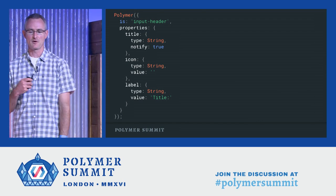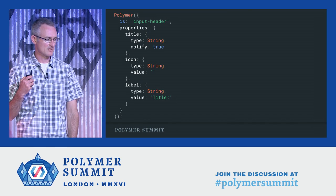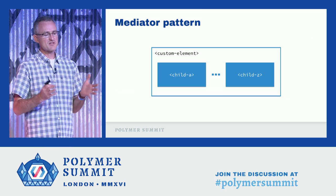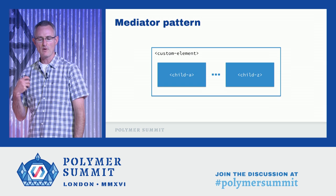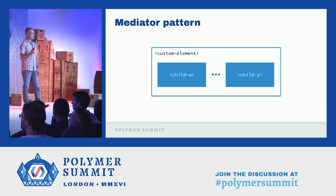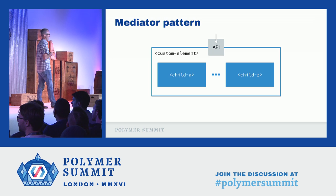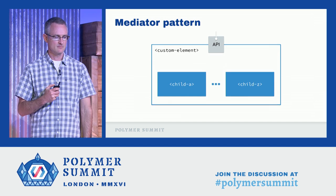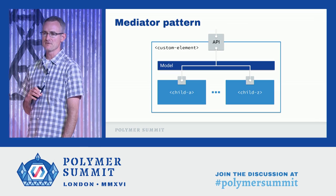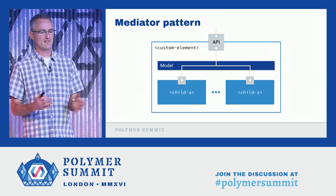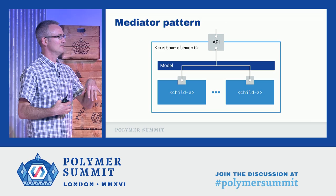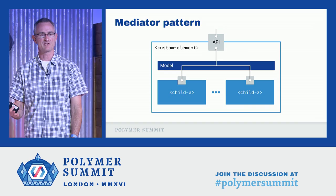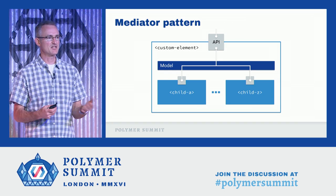Polymer also provides convenient helpers for defining APIs and behaviors for your elements, like the simple format for declaring properties. But the features that Polymer provides are really based around a certain way of thinking about the component model — the mediator pattern. In this pattern, a custom element acts as a mediator, encapsulating the elements that it's built from, orchestrating interactions between them, and exposing an API for other elements to use. You can think of a custom element in the mediator pattern as having a model with facets of its own API, pulling levers exposed by the APIs of the elements it encapsulates, plus whatever logic is necessary to make it all work together.